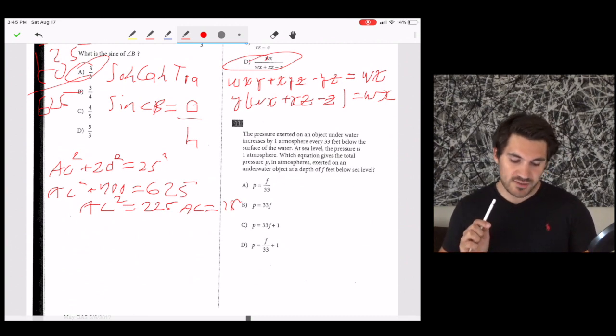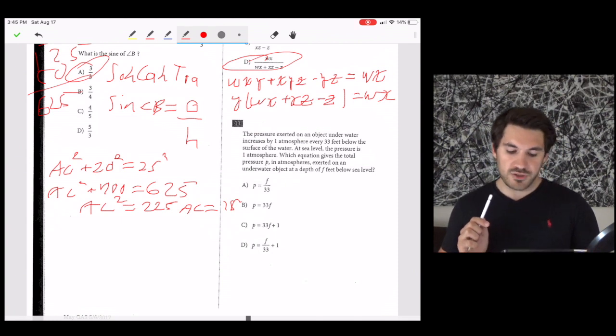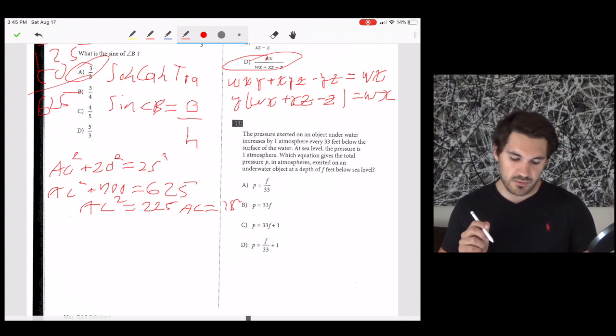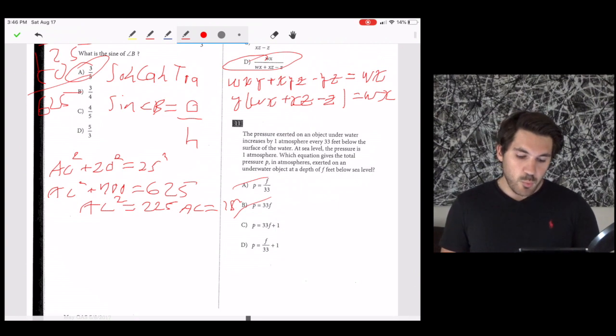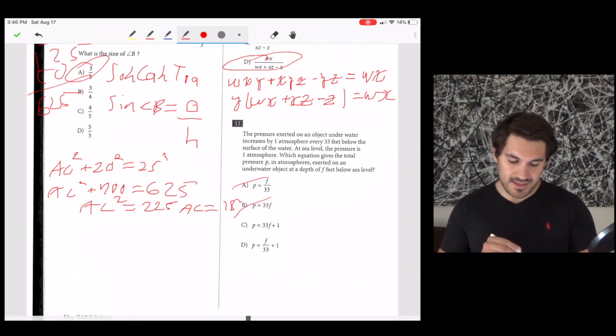Number 11, the pressure exerted on an object underwater increases by 1 atmosphere every 33 feet below the surface of the water. At sea level, the pressure is 1 atmosphere. Which equation gives the total pressure in atmospheres exerted on an underwater object at a depth of F feet below sea level? We know that at sea level, the pressure is at 1 atmosphere. In other words, when F is 0, we start at our y-intercept, which is going to be 1. So we know A and B can't be our answer. Now, we know it increases by 1 every 33 feet below the surface of the water. In other words, when we increase F by 33, the pressure needs to increase by 1. The only answer choice that does this is D.